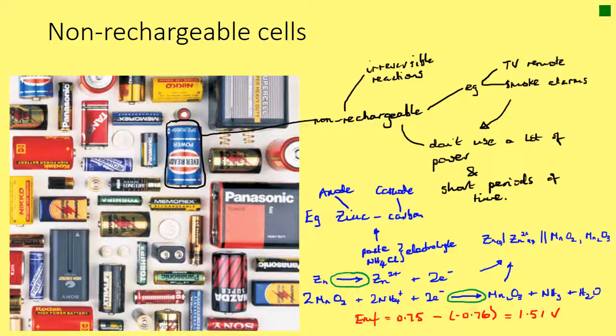In a zinc-carbon dry cell battery, the zinc is the anode, and the cathode is a mixture of carbon and manganese dioxide. In between the electrodes there is a paste which acts as the electrolyte — usually ammonium chloride — similar to the solutions we've seen in two half-cell arrangements.